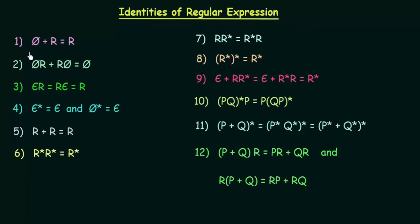The first identity says that φ + r = r. Here φ is used to denote an empty set. That means if you do the union of φ and r, where r is any regular expression, then you get back the regular expression r. So plus is used to denote union — the union of φ and any regular expression is the regular expression itself.